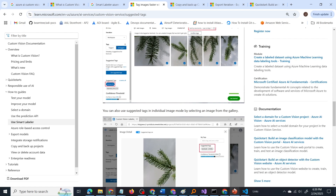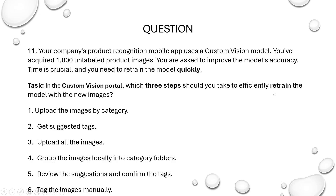So how should we retrain the model with the new product images? First, upload all the images to the custom vision model. Then get suggested tags from the smart labeler. Then review the suggested tags and confirm them. Then retrain the model. These are the three steps to follow. We need not tag the images manually — that would take more time. We have to train the model quickly, so we use the smart labeler tool of Azure AI Custom Vision.